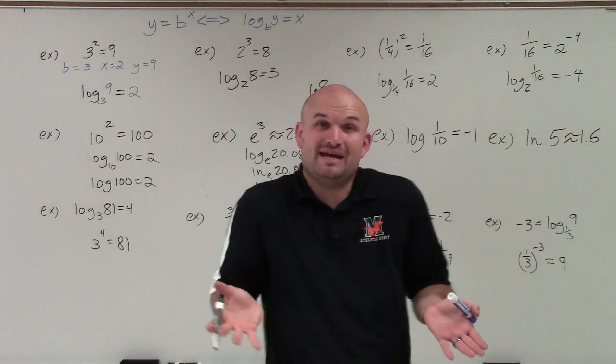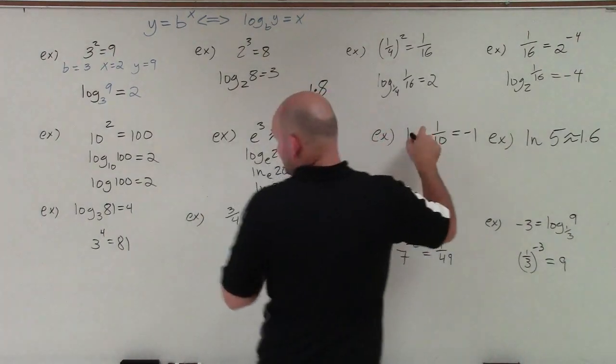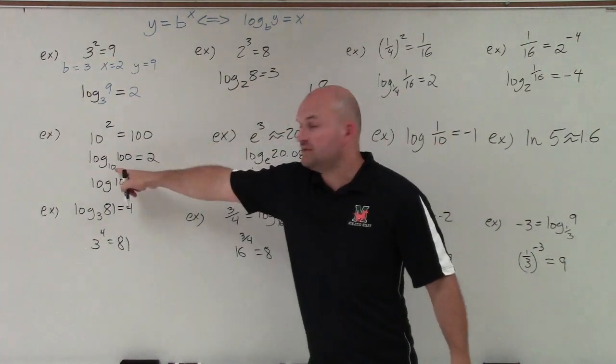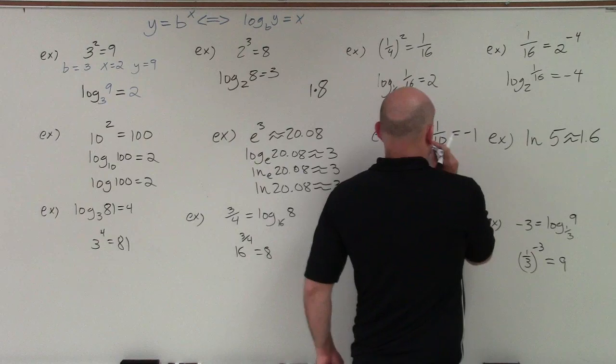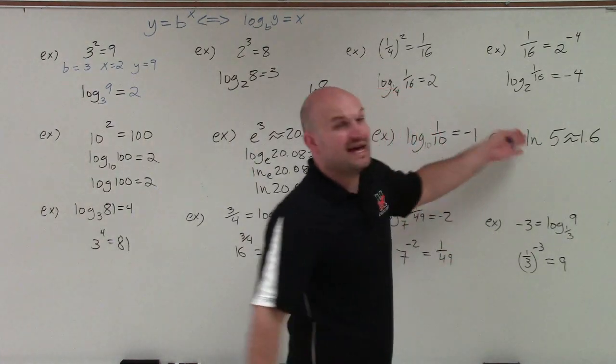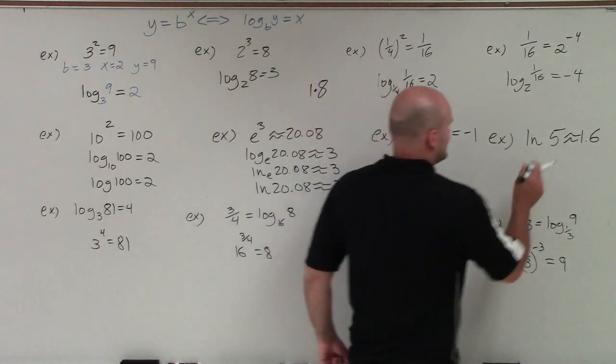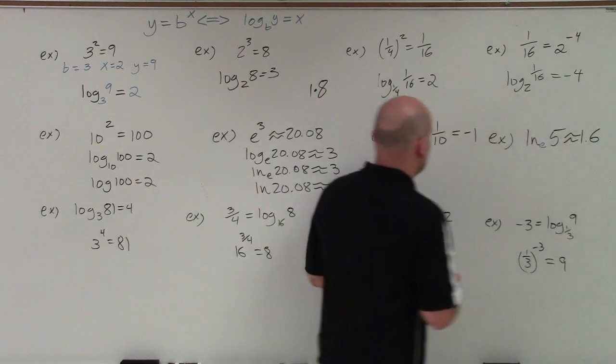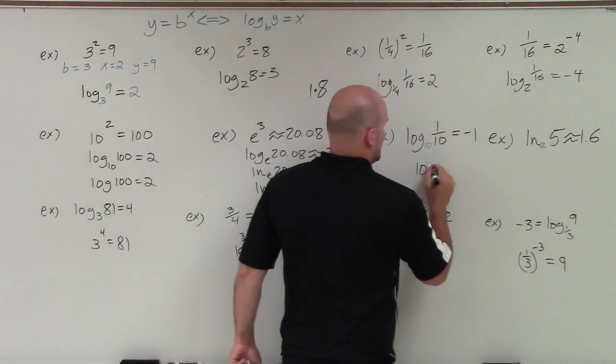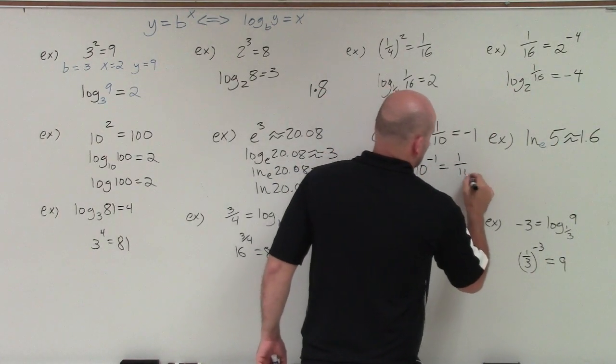So now, a lot of students are like, well, I don't know what the base is. Well, remember, logarithm, if there's no base provided, we use it as base 10. So you're just going to write in a nice little 10 there. And for the ln, when the base is not given, we just put a nice little e there. So now, I can say 10 to the negative first power equals 1/10. And e to the 1.6 is approximately 5.